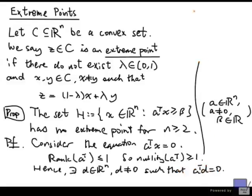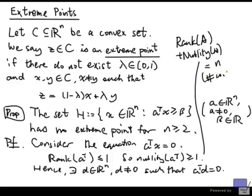Recall that I am here using the fact that the rank of a matrix plus the nullity of the matrix is equal to n, the number of columns of A. Now, with this, we can show that no point in H is an extreme point.